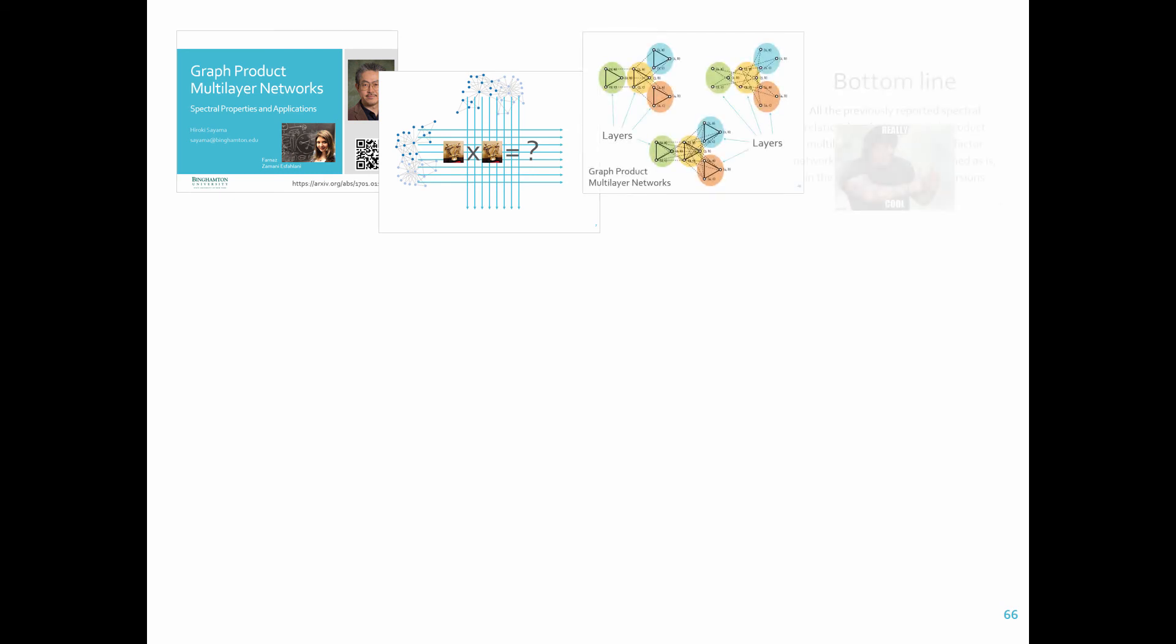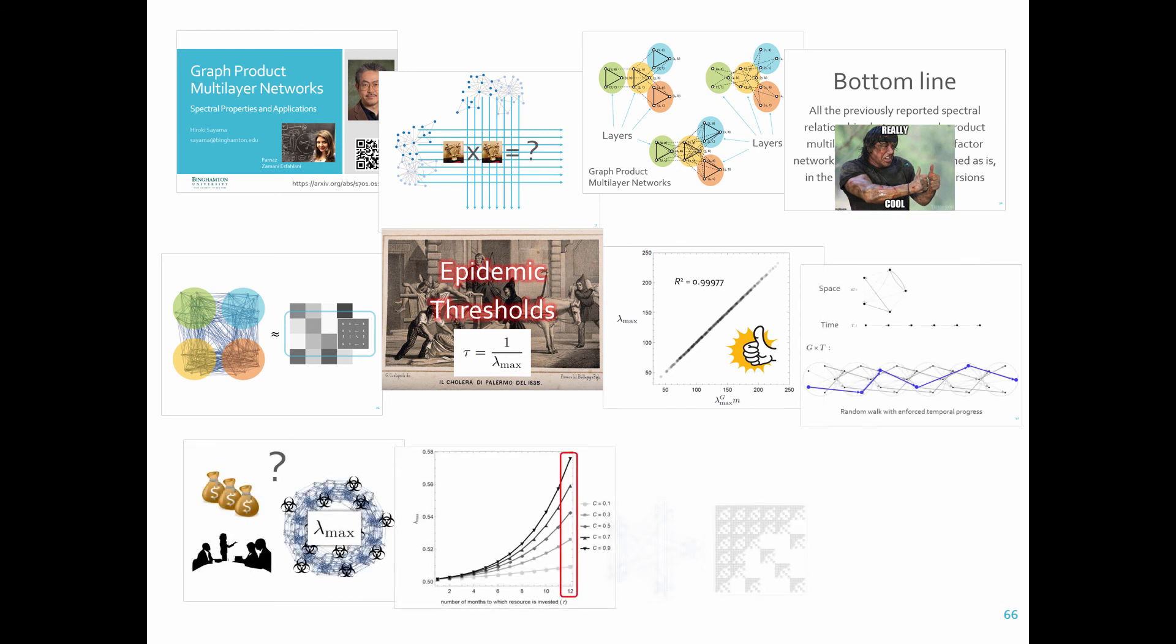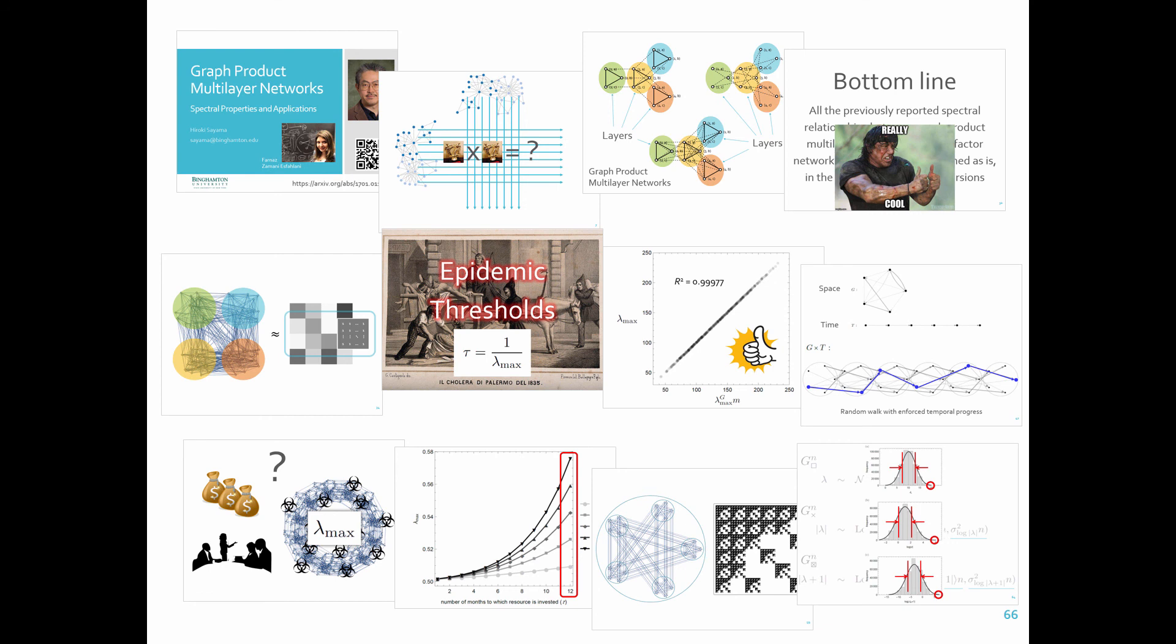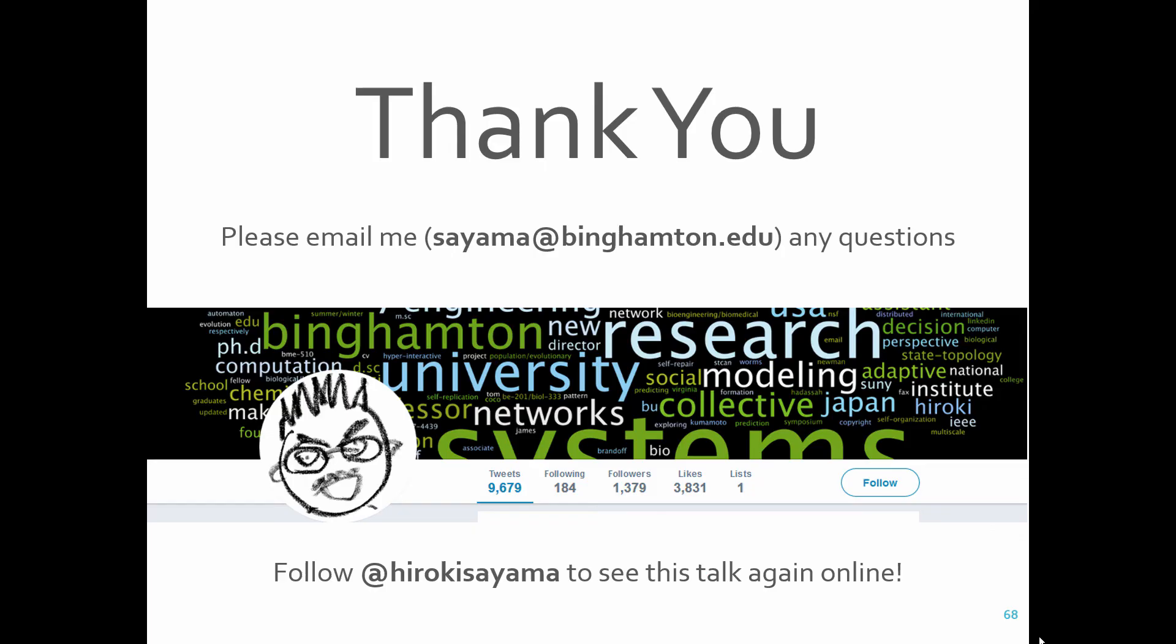Alright, that's all I have today. I hope this is enough to illustrate what the graph product multilayer networks are, what their mathematical properties are, and how they can be used for certain types of network modeling and analysis. Again, it's an idealized topological model, which may not capture the true complexity of actual complex networks in the real world. But I believe it can be used as a good reference model for analytical work of approximation, or perhaps as a basic skeleton model of networks that involve multiple orthogonal spaces, to which additional topological features can be added later. Anyway, again, I apologize for not being here today. Please have a look at the preprint if you are interested, and feel free to email me any questions or comments. Thank you very much for your attention.